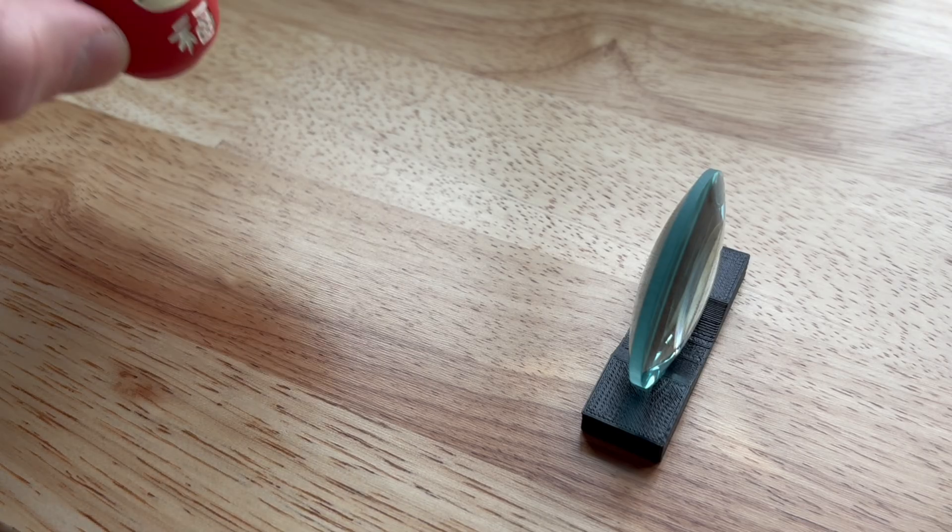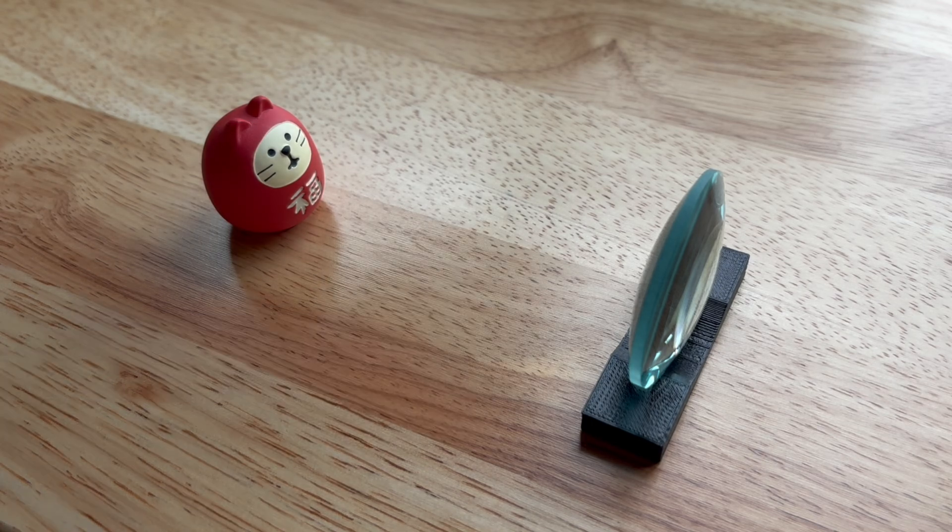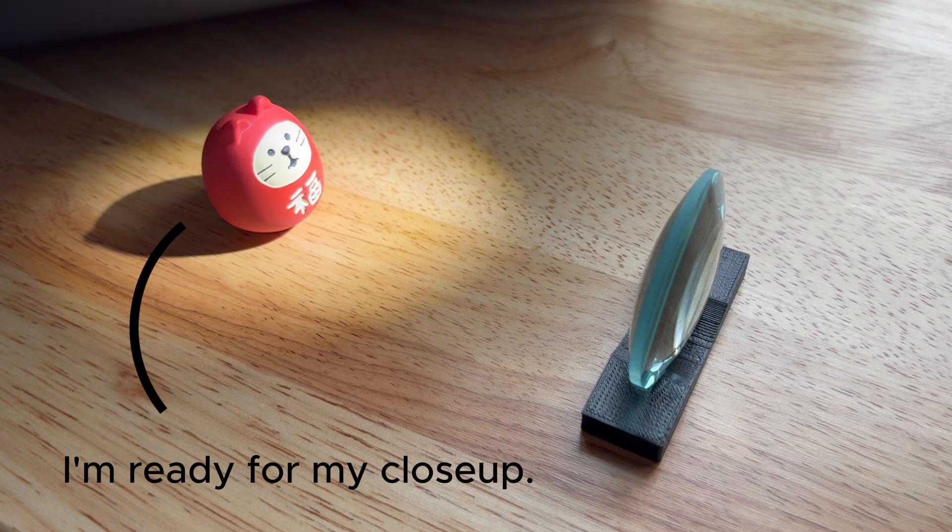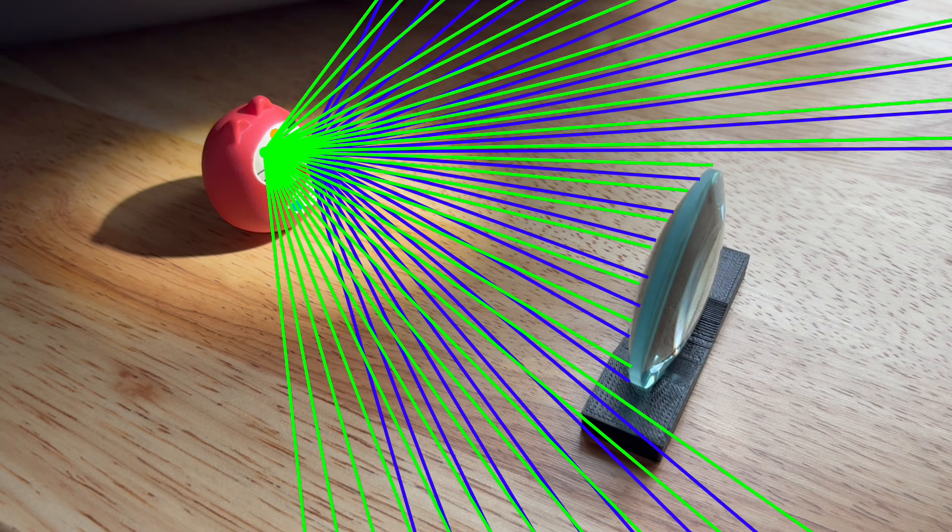That's one point of light, but usually optical systems image a scene or object. For now, forget about where the light originally comes from, like the sun or an illumination source. Just assume that each point on the object is a single point emitter of light, and that the rays are uniformly distributed around the point.